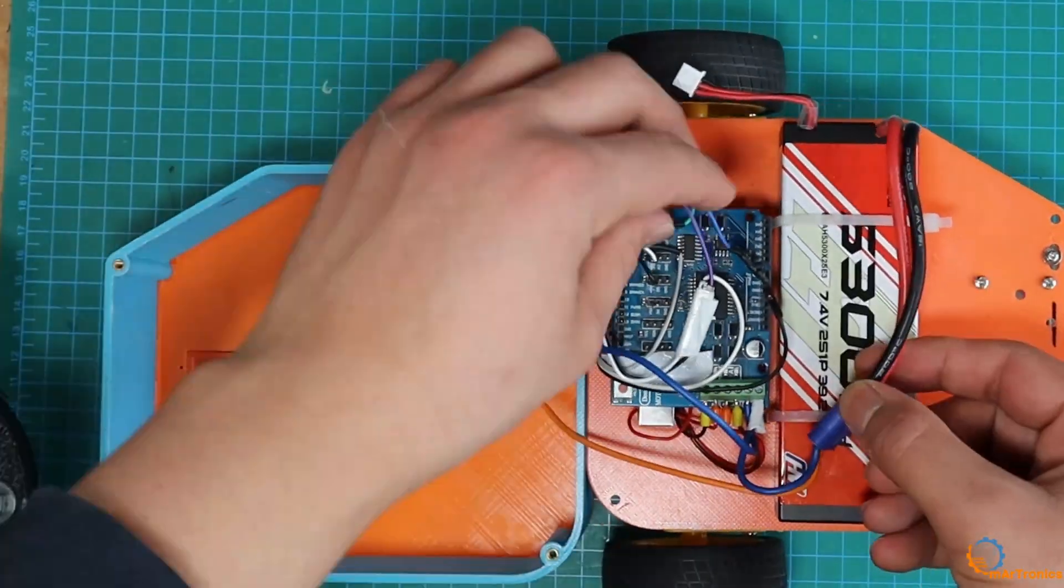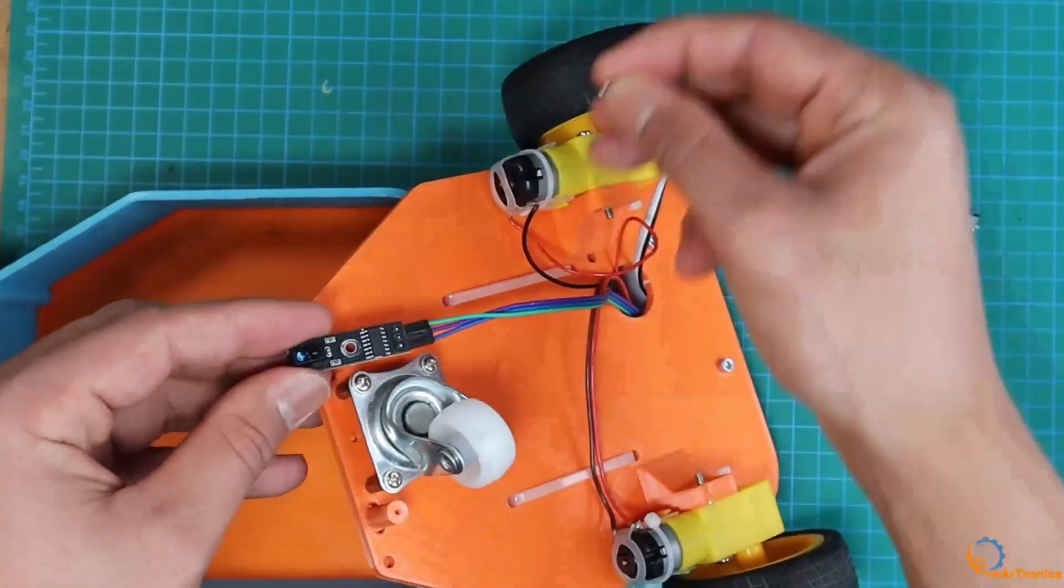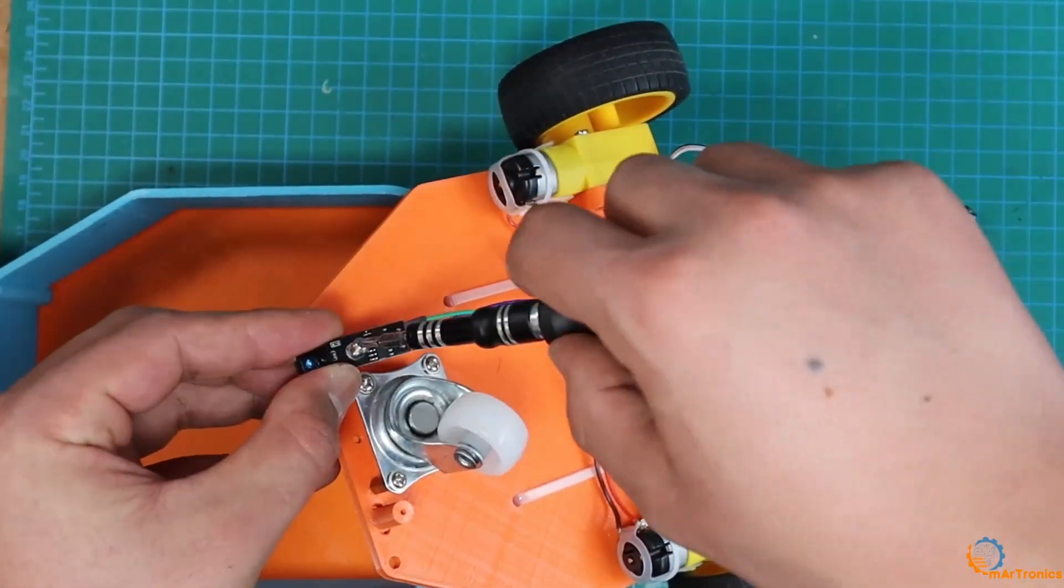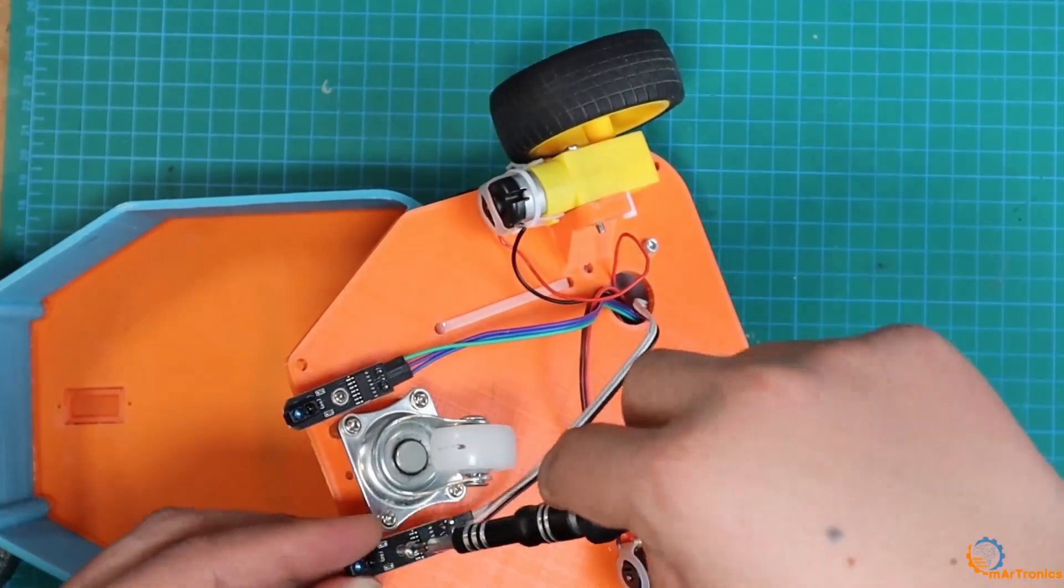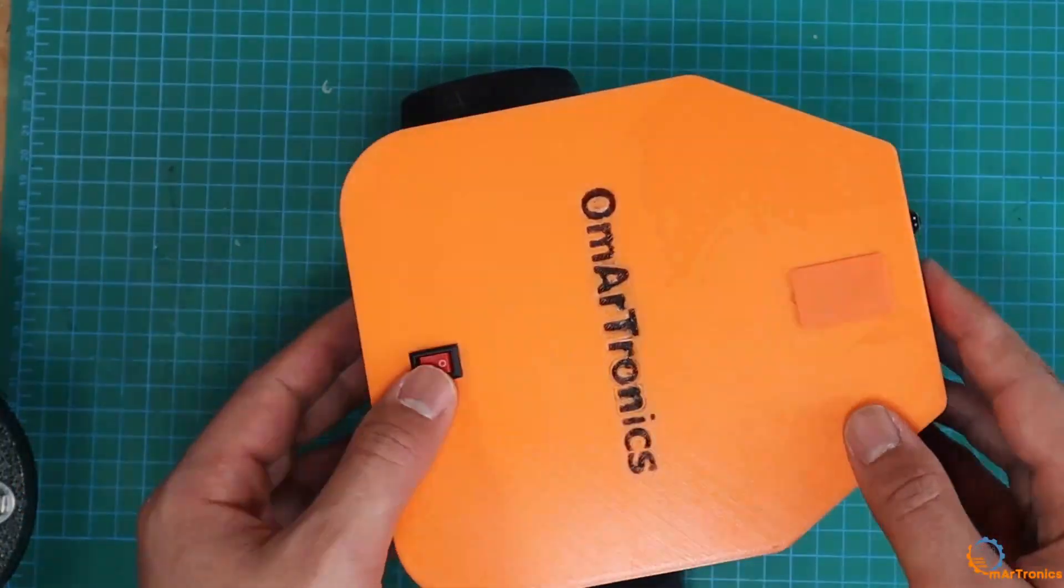I soldered the wires that connect to the battery and the Arduino motor controller. I connected the motors. I also added the sensors like this, as shown in the wiring diagram. I connected all the electronic components.